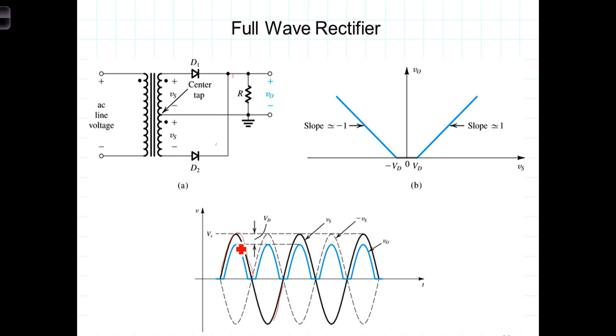We can determine the peak inverse voltage across the reverse biased diode by looking at the circuit. During the positive cycle, at the point that the source is at its peak, the voltage at this point right here will be V sub S minus V sub D, the voltage drop across the diode.